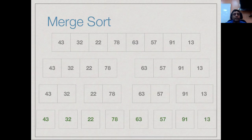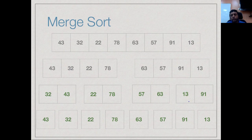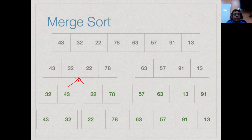Now we start merging. We merge adjacent pairs: the first pair, the second pair, the third pair, and the fourth pair. Merging the first two gives a sorted pair with the smaller element first. The second pair stays in order since 22 is smaller than 78. The third and fourth pairs are exchanged. Importantly, the exchange comes from comparing two values and placing the smaller one first — not by looking at the array of size two directly. Now we want to merge these sorted pairs into sorted segments of length four.